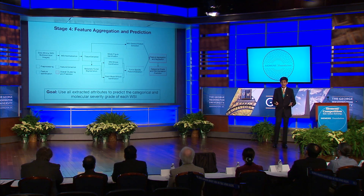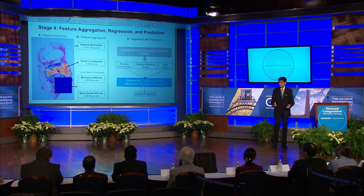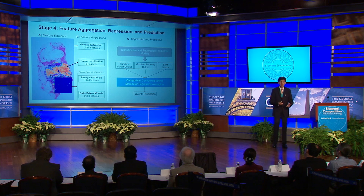Finally, I aggregate all of my extracted features to predict the categorical and molecular severity grades of the entire whole slide image. All of the features extracted are shown in Part B, which are passed through both classification and regression classical machine learning models to obtain an overall result. For categorical classification, a voting classifier is applied to isolate the prediction with highest confidence. And for molecular prediction, regression averaging is performed to obtain a centralized result.